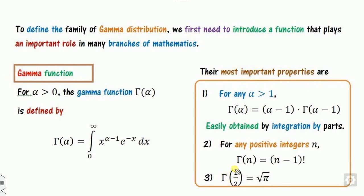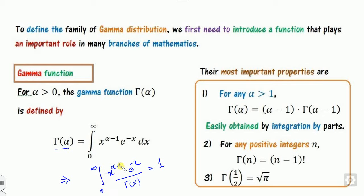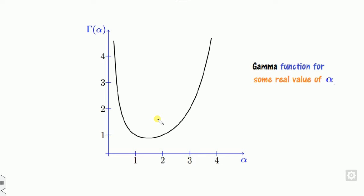The third important property is that gamma of one-half equals the square root of pi. Based on this gamma function, we can define a probability distribution. If we divide both sides by gamma of alpha, the integral over the domain becomes 1. Any function whose integral over the domain equals 1 is called a PDF, so we can define a gamma-based PDF.